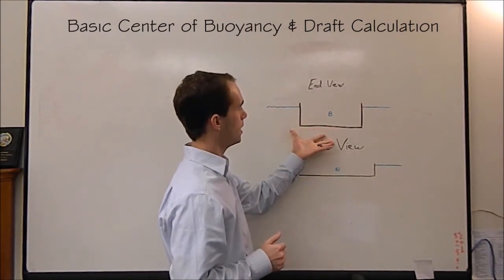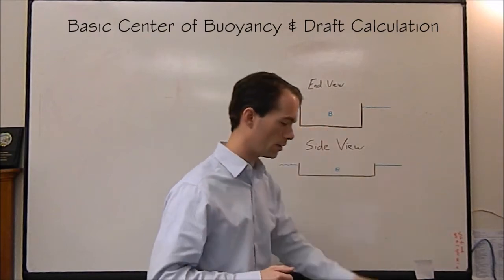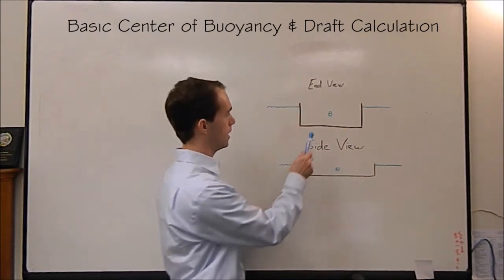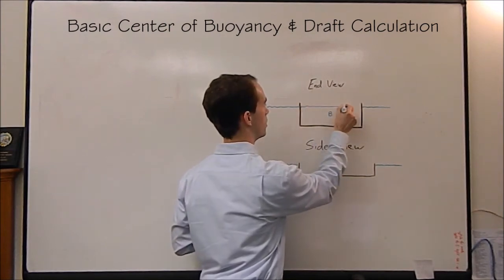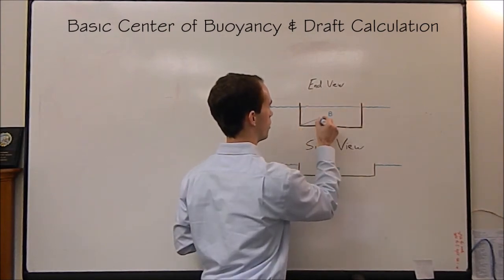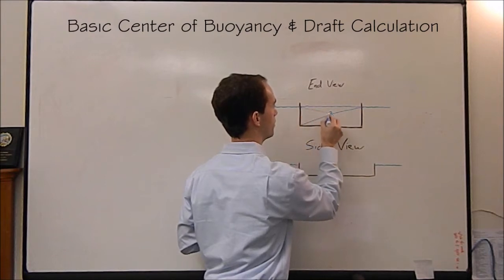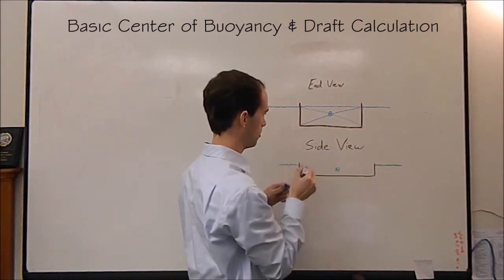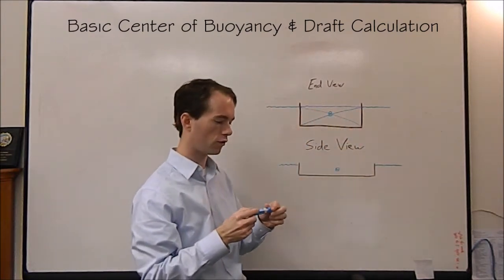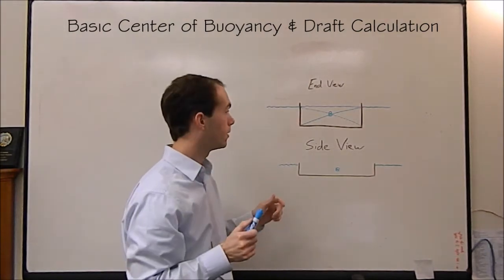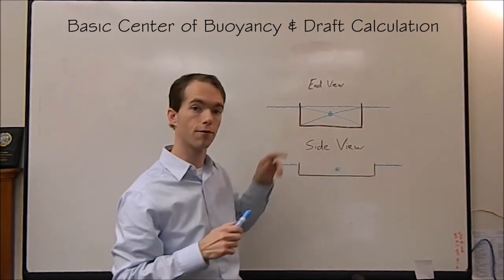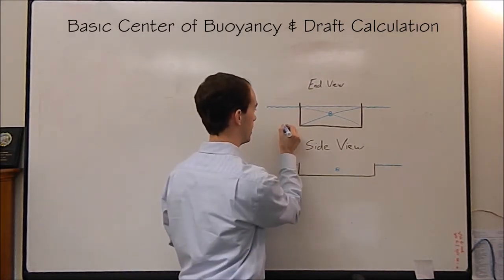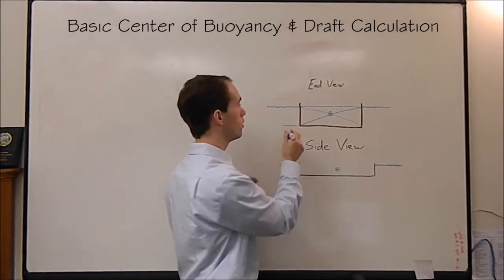So if we look at a boat from the end, center of buoyancy, like I mentioned in another video, is going to simply be in the center of your imaginary waterline. If you were to draw an X, just like finding the center of any rectangular shape, center of buoyancy is going to be at the intersection there. Well, that's great, but how do you know where there is? You have to know your draft.